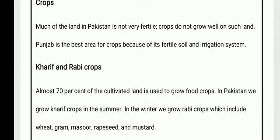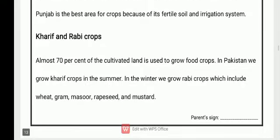There are Karif and Rabi crops. Almost 70 percent of the cultivated land is used to grow food crops in Pakistan. We grow Karif crops in the summer. In the winter we grow Rabi crops, which include wheat, gram, masoor, and mustard.